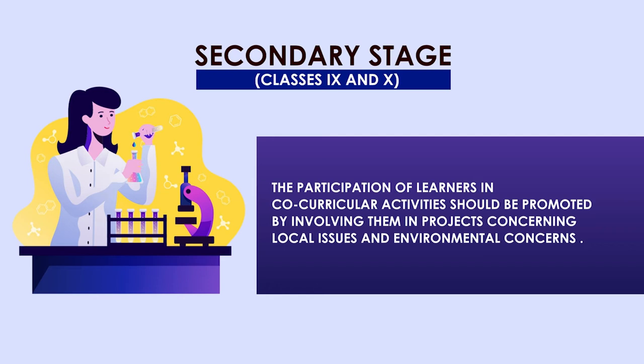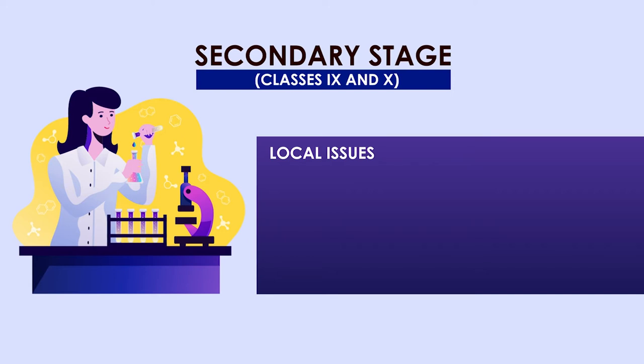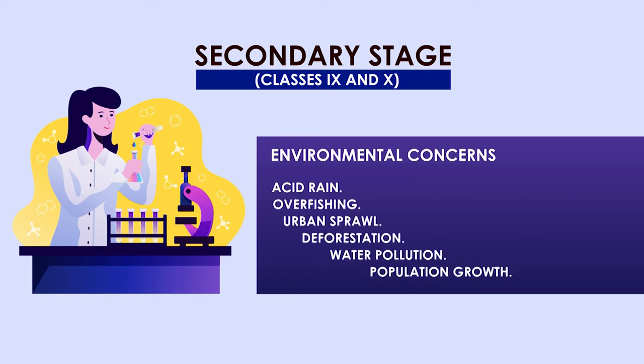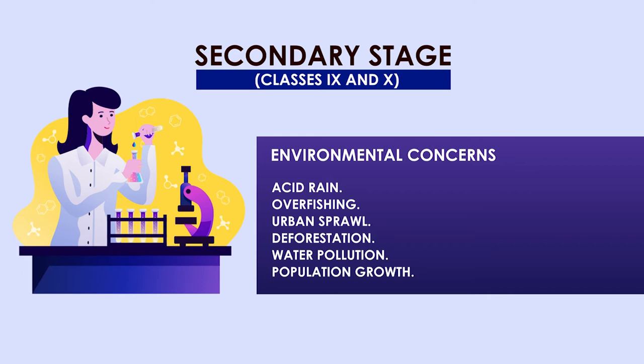Students should be involved in projects concerning local issues and environmental concerns. At the secondary stage, local issues which must be emphasized include basic sanitation, health care system, pollution, and access to clean drinking water. Environmental concerns should focus upon acid rain, overfishing, urban sprawl, deforestation, water pollution, population growth, climate change, and melting of glaciers along with global warming. The board examination should include questions that test the experimental knowledge and skills of learners, as recommended by National Curriculum Framework 2005.